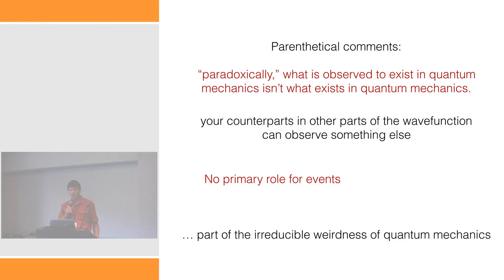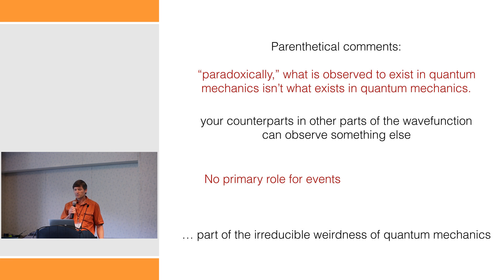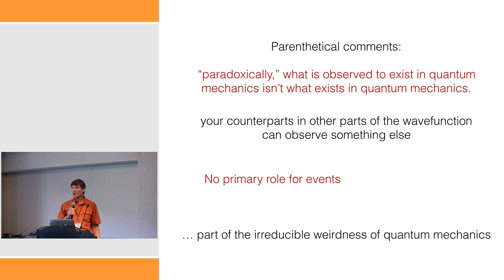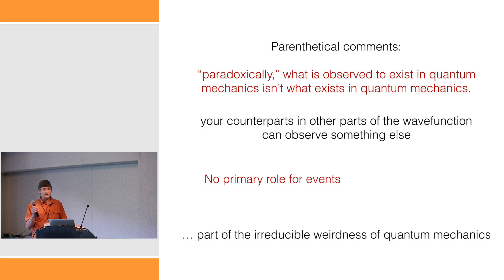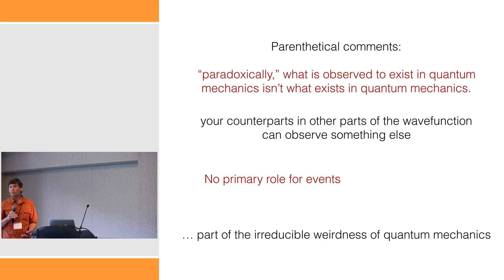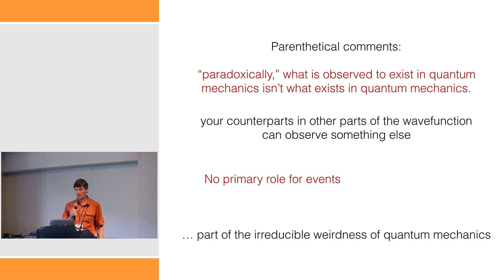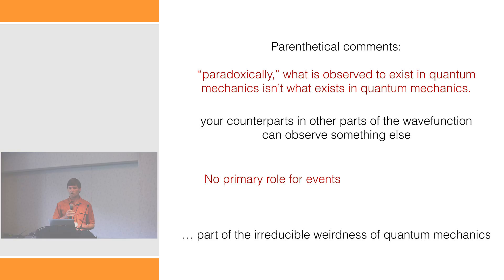Two parenthetical comments. First, paradoxically — and I put that in quotes because it's not really a paradox — what is observed to exist in quantum mechanics isn't what exists in quantum mechanics. What we see is not necessarily what exists, unless your counterparts in other parts of the wave function observe something else. Also, there doesn't seem to be a primary role for events in this story — that's not something you start with; it may come out in some effective sense. This is just part of the irreducible weirdness of quantum mechanics, and maybe we just have to get used to that.